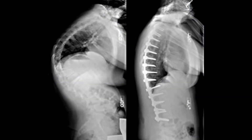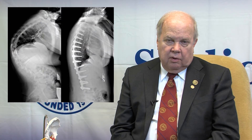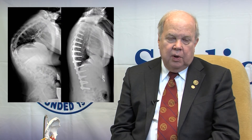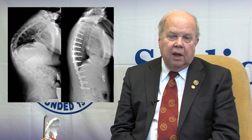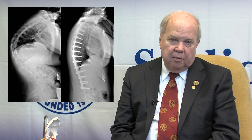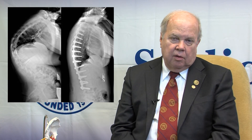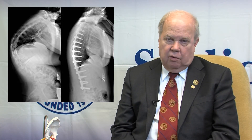Surgery involves the insertion of metallic implants into each vertebra, and these are used to connect rods to the spine. There is compression applied between the implants, and this causes narrowing of the spine posteriorly and elevation anteriorly, which allows correction of the deformity.